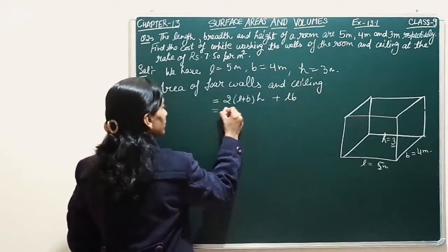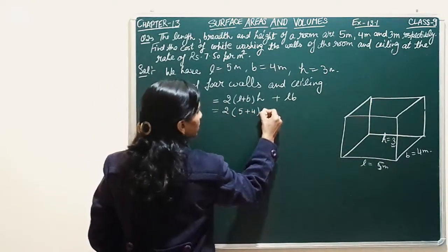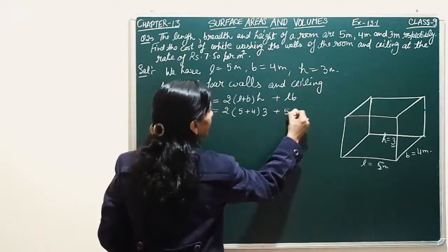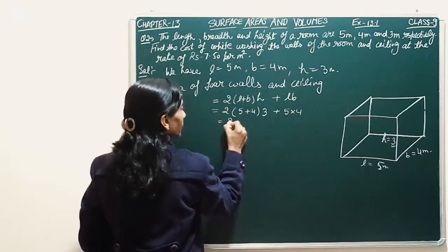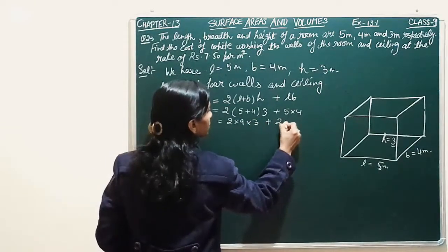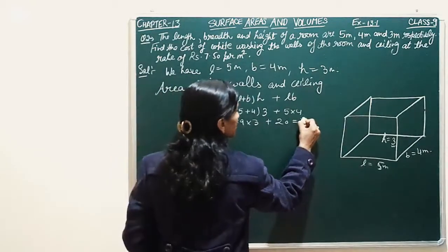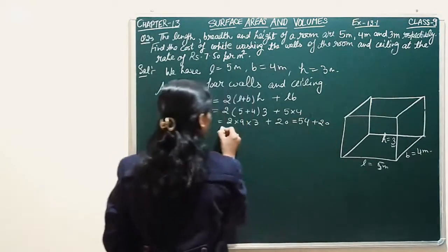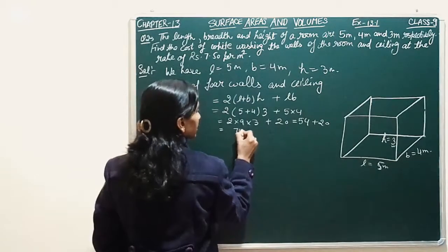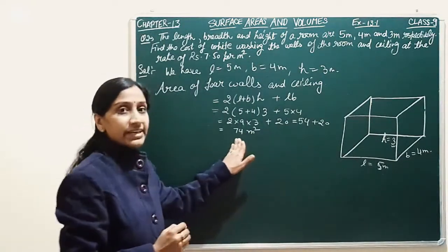Now here we have values. 2 into (5 plus 4) into 3 plus 5 into 4. That's 2 into 9 into 3 plus 20. We have 2 into 9 is 18, and 18 into 3 is 54, plus 20. That means 74 meter square. This is our room area.